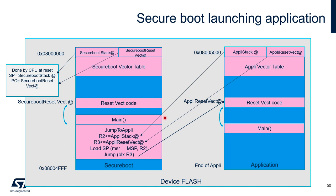The last piece of code in the bootloader is a jumper. This jumper gets the application stack pointer and the application reset handler address, then sets the main stack pointer to the application stack pointer value and jumps to the address of the application reset handler.